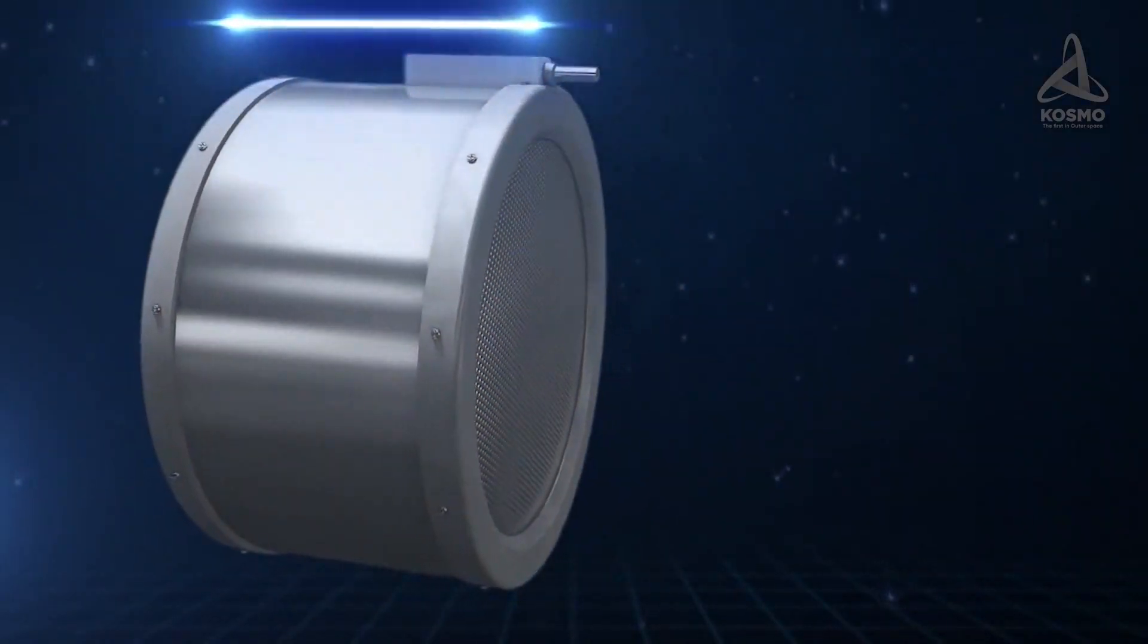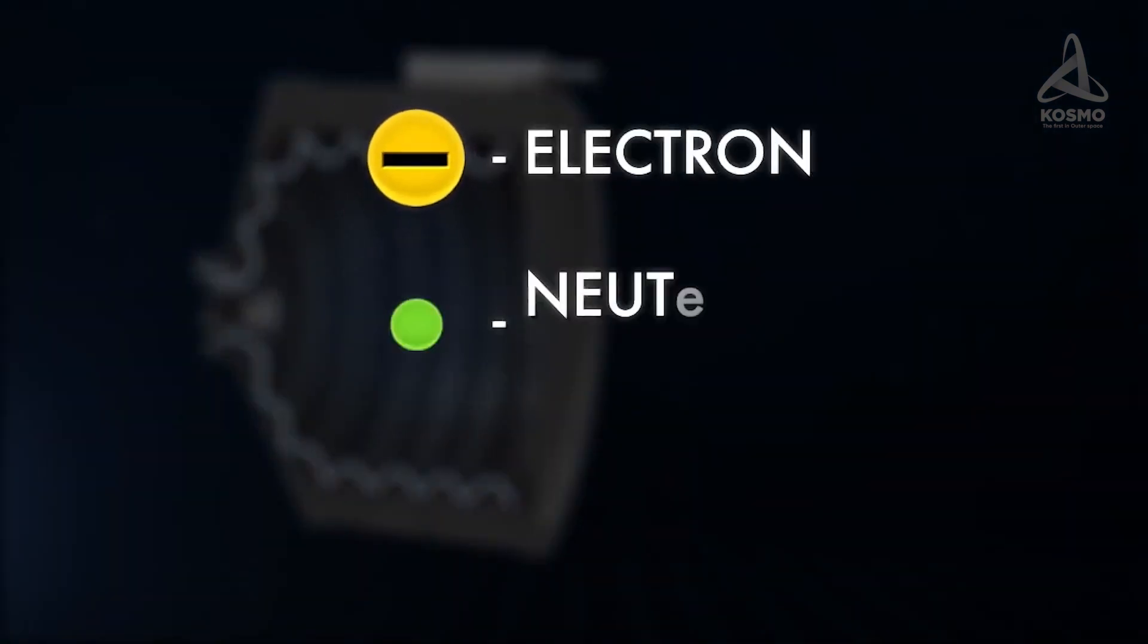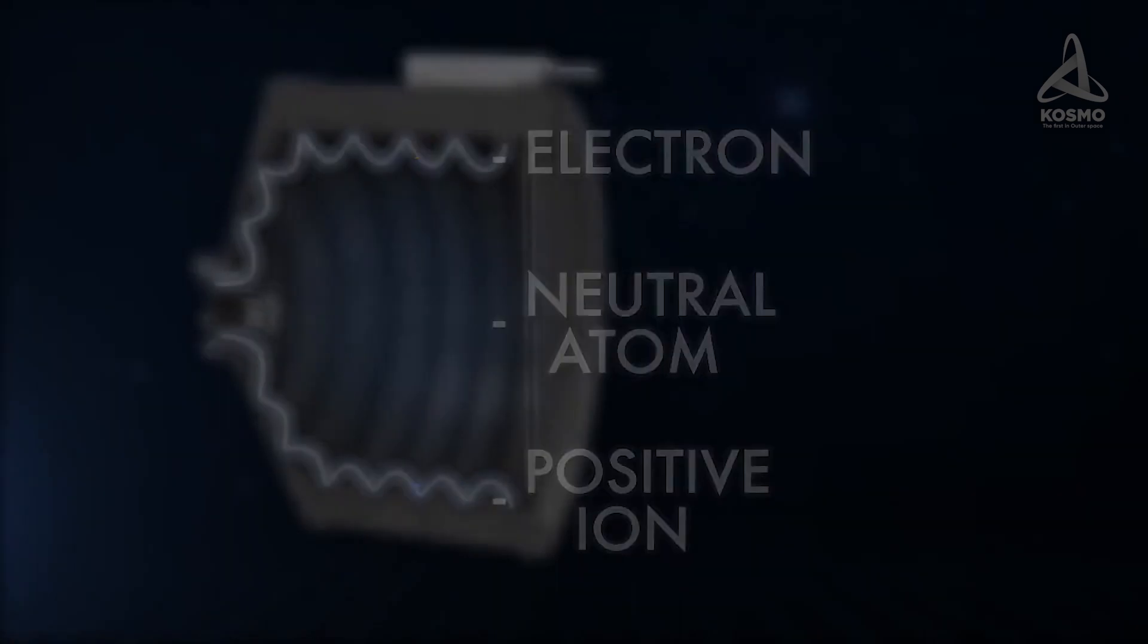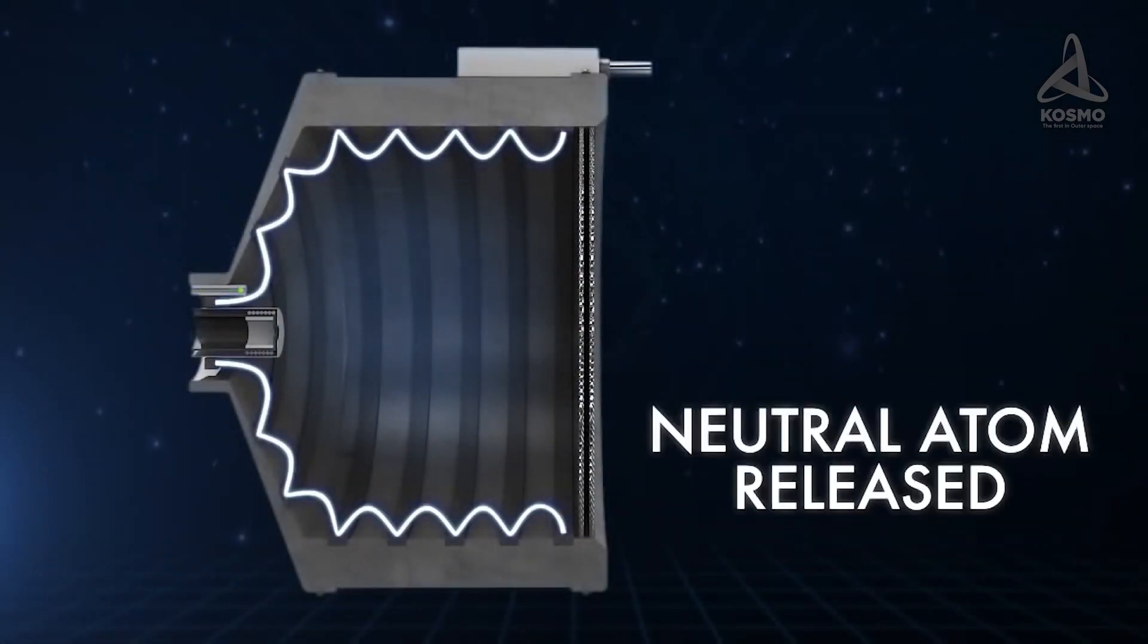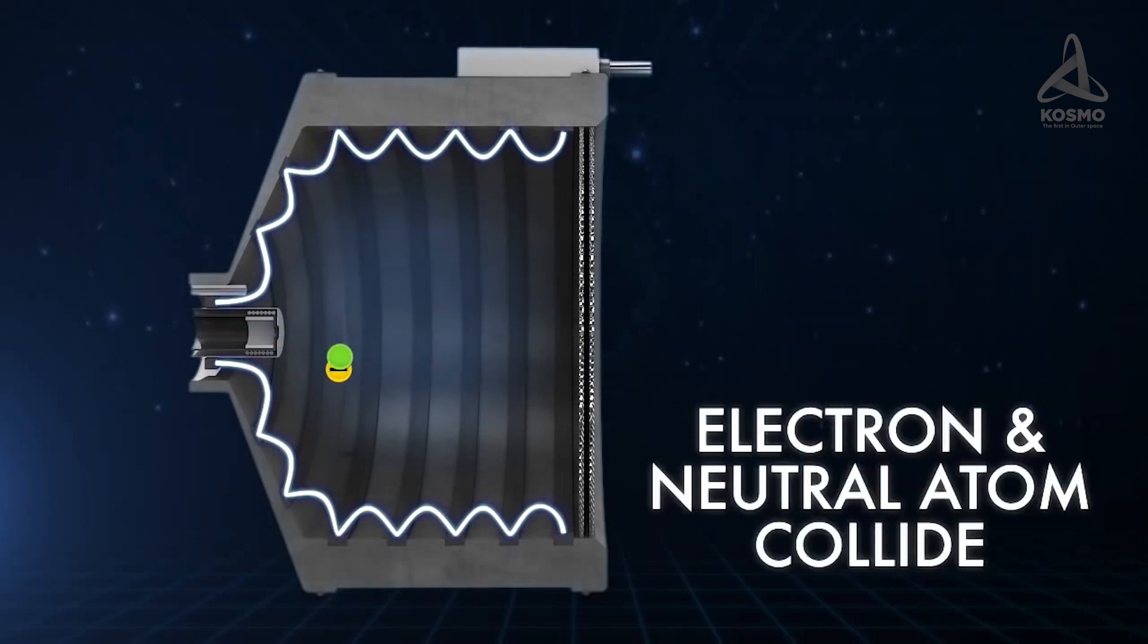The ion thruster contains some gas, which is ionized with a gas charge, where gas atoms with a neutral charge are split into negative electrons and positive ions. After that, ions are accelerated by an electric field in a sophisticated system of grids. This same system blocks the movement of electrons.